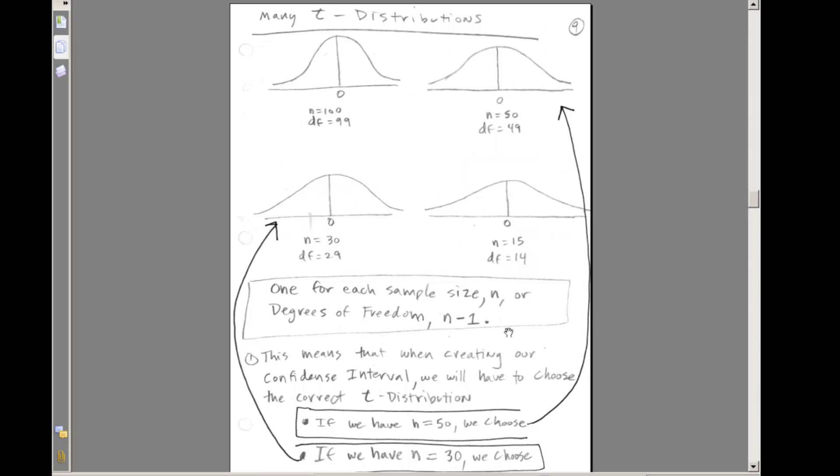In this chapter, we only have one sample. Later, we'll see when we have two samples. This means that when creating our confidence interval, we have to choose the correct t-distribution. So if we have n equals 50, we choose this one. n equals 50 degrees of freedom equals 49. If we have n equals 30, we choose this one. n equals 30, degrees of freedom equals 29.